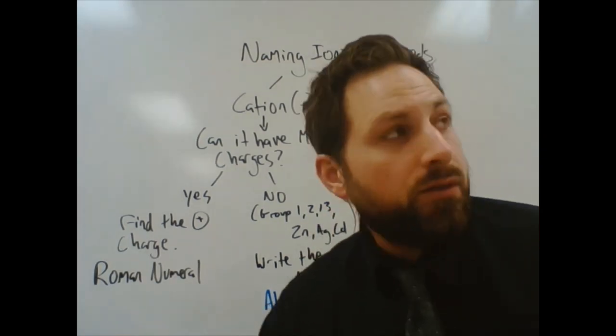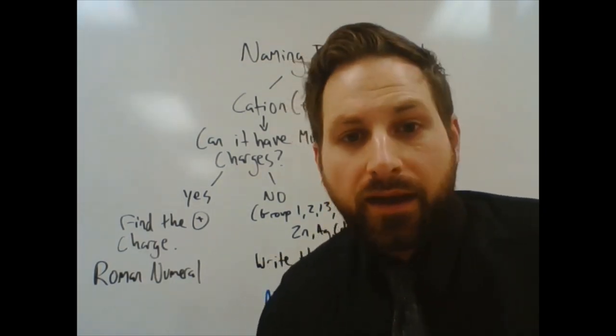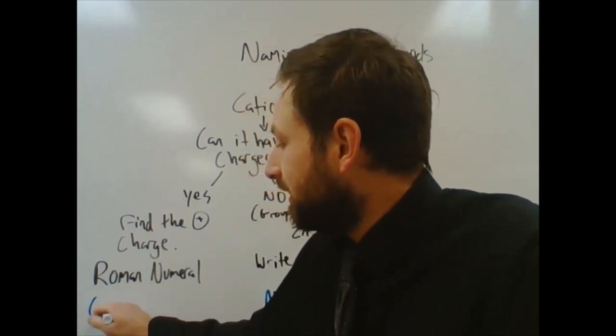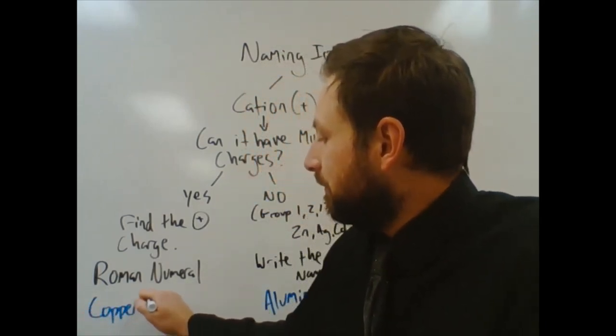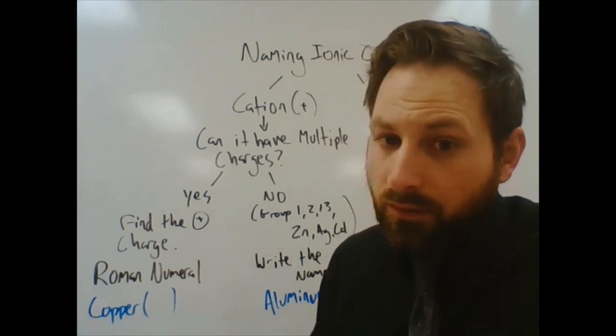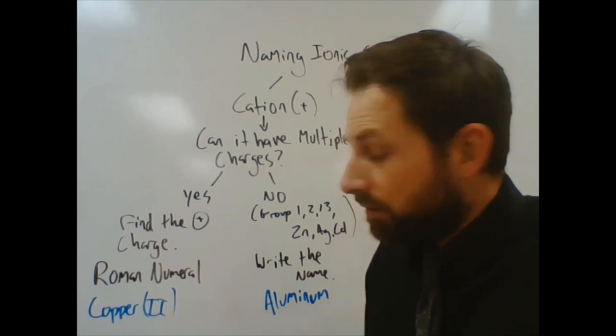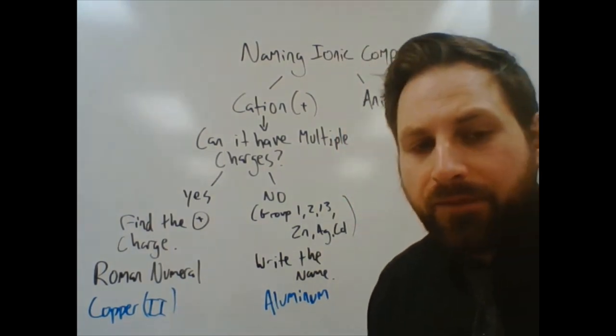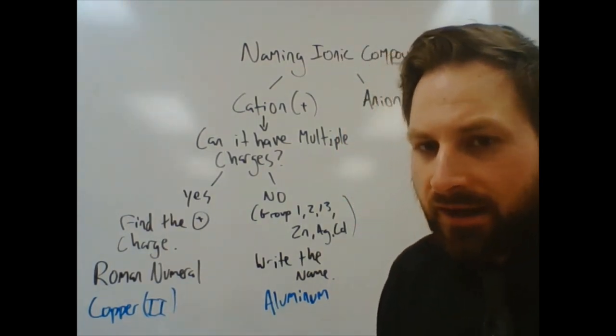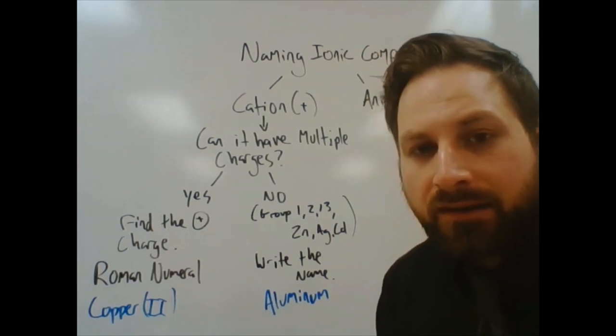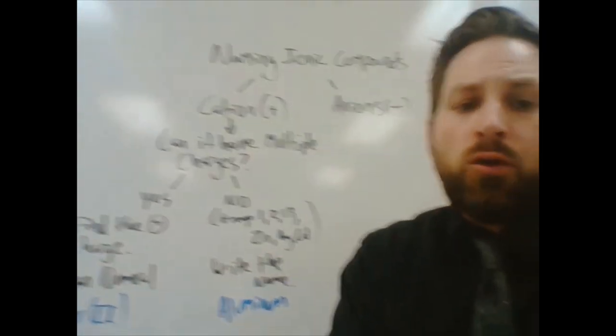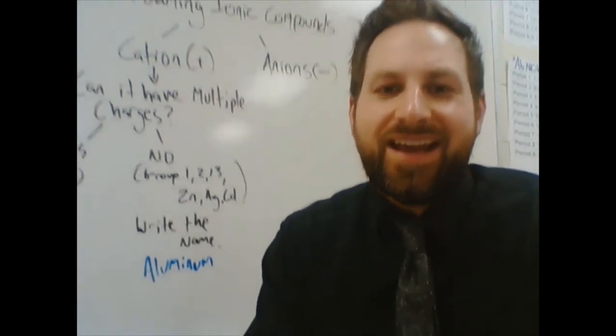Over here, a Roman numeral thing. Common one would be like copper. Not just copper. It's going to be copper with a Roman numeral. Maybe Roman numeral one. Maybe Roman numeral two. But you would have to figure out its overall charge. And again, you would do that by finding the total negative charge.